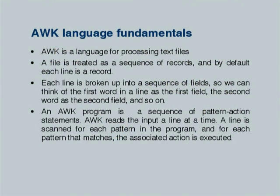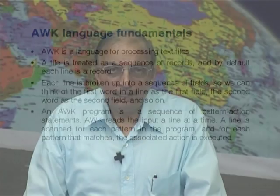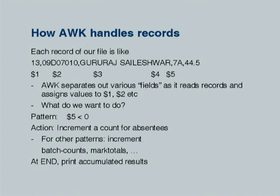For every record, the logic is simple: if a record has a negative value for marks ($5 less than 0), treat the student as absent and do not count that record in the average. The pattern is written as: $5 < 0 — increment absent_count. For records where $5 >= 0, we must maintain four entities: a total count of present students, total marks, and for each batch a count and a marks sum. These batch counts use an associative array where the batch code string itself — like '0A' — is the array index.